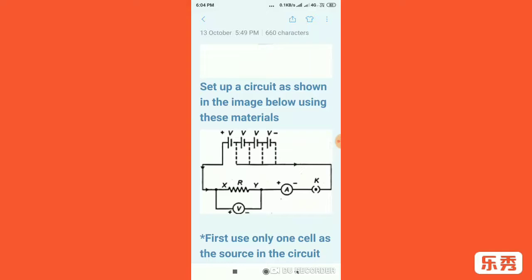So if you want to know what a nichrom wire is, nichrom wire is an alloy of nickel, chromium, manganese, and iron metals.